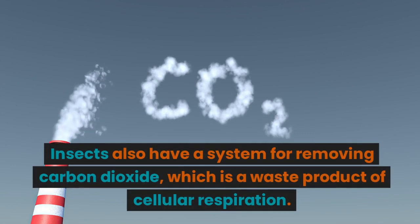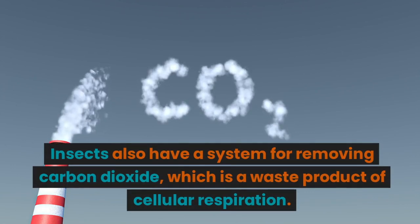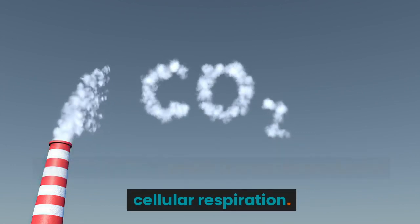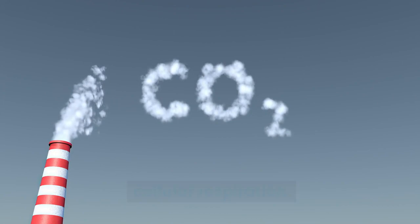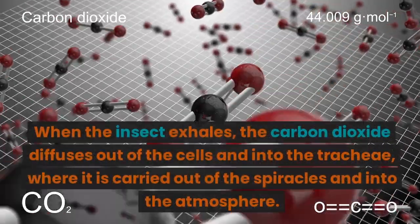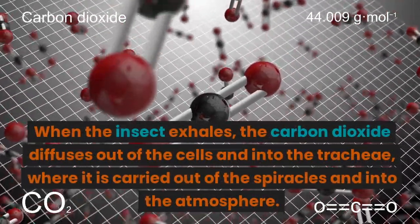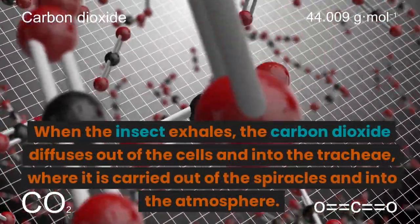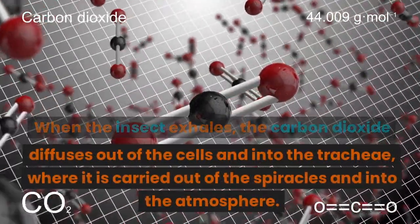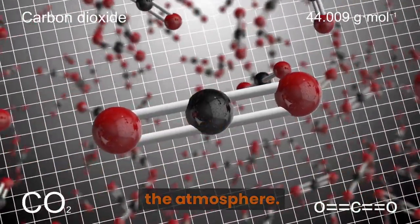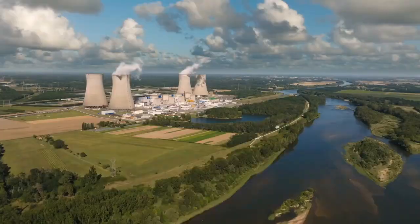Insects also have a system for removing carbon dioxide, which is a waste product of cellular respiration. When the insect exhales, the carbon dioxide diffuses out of the cells and into the tracheae, where it is carried out of the spiracles and into the atmosphere.